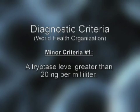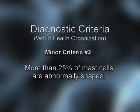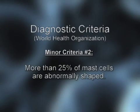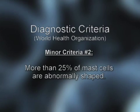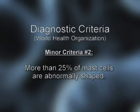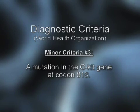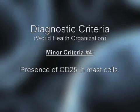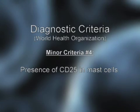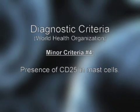One of the minor criteria is a triptase level. The second minor criterion is the shape of the mast cell, which is abnormal in mastocytosis compared to a normal mast cell, because they have an abnormal gene. This brings us to the third criterion, which is the mutation in the CKIT gene at exon 816. And the fourth minor criterion is presence of an abnormal surface marker called CD25.